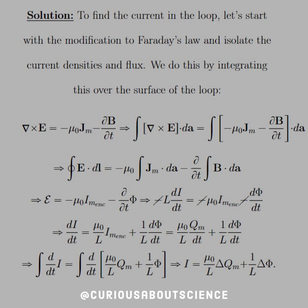We split up the integration in the second part, where we have the current density times dA. Then we move the partial time derivative out to B dot dA — and we get a flux. The line integral of E dot dL is the EMF, the voltage. So we have the EMF equal to minus mu-naught times the magnetic current enclosed, minus d/dt of phi, the flux.